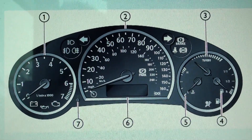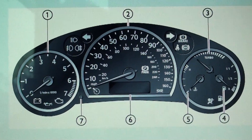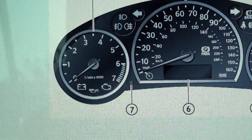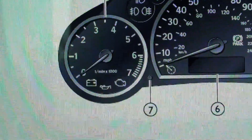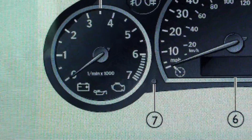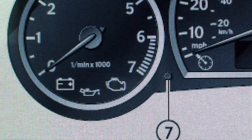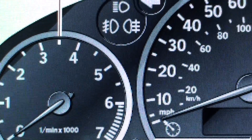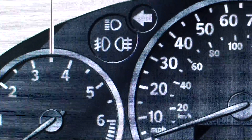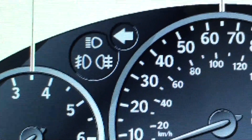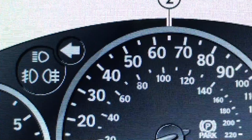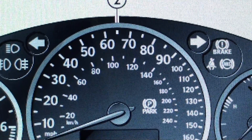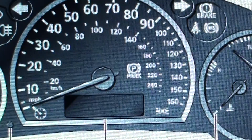This is the dashboard for the Saab 93 Mark II. We're just having a quick look at all of the dashboard warning lights here. If you do have any of these warning lights showing up on your dashboard, you may need to hook it up to a diagnostic code reader, which will read and let you know what the problem or trouble code is.